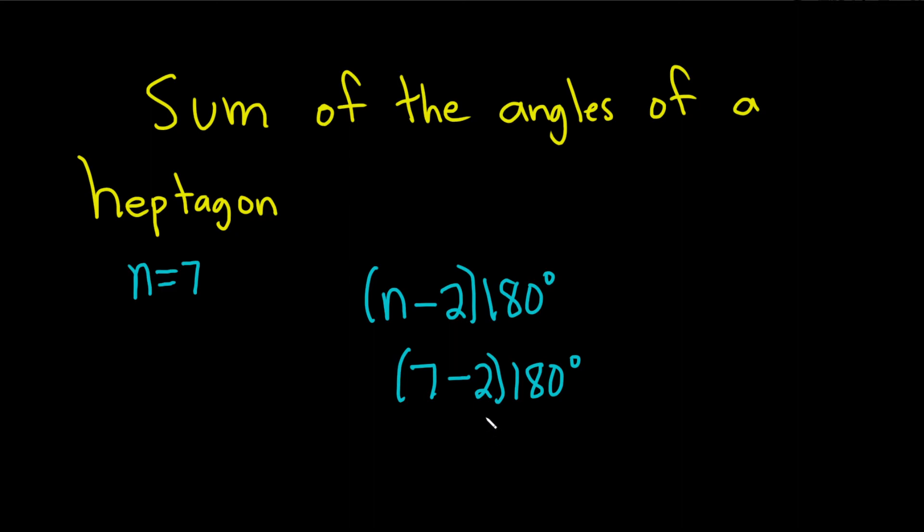So 7 minus 2 is 5, so we get 5 times 180 degrees. And if you work this out in your calculator or you do it by hand or in your head, you get 900 degrees. This would be the sum of the angles of a heptagon.